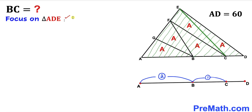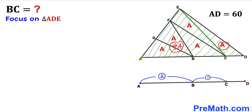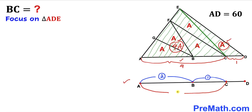Now let's focus on the big triangle ADE. It has been divided into two triangles: the one on the left has a combined area of 4A, and the one on the right has area 1A. Their corresponding bases are AC and CD. Since the ratio is 4A to 1A, the ratio of the bases is 4 to 1. So I'll represent distance AC with a box-4 and distance CD with a box-1.